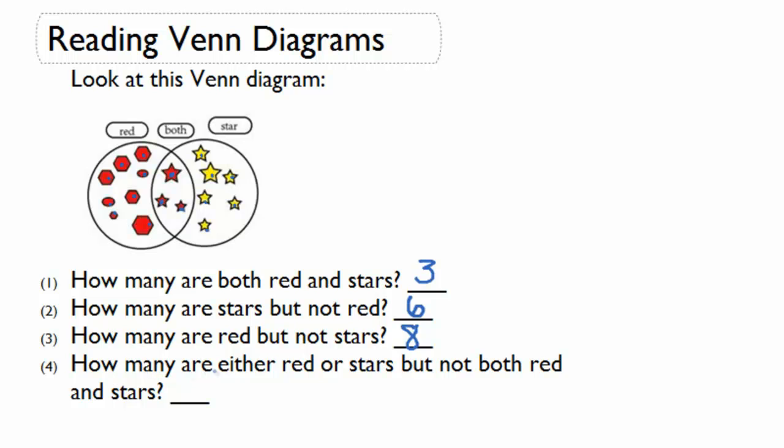And how many are either red or stars but are not both red and stars? Here we can count the number of items that are stars but not red and that are red but not stars. So we have six plus eight, we'll have 14 items that are either red or stars but not both.